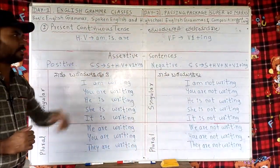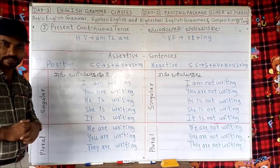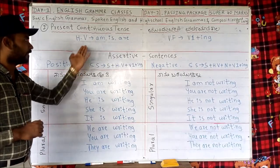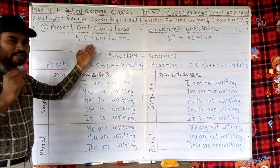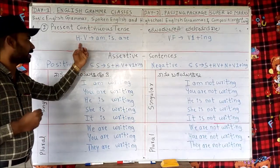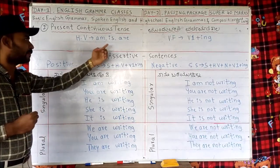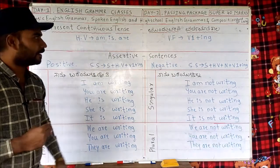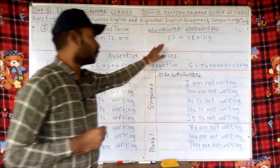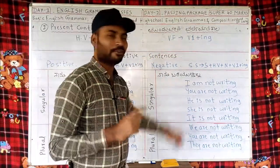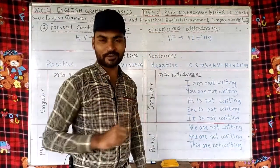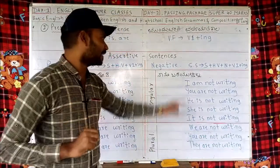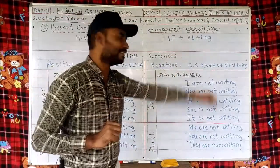Present continuous tense — Mundu Varida Varta Mana Kala. Here we have three helping verbs: am, is, are. Then verb form — only one verb form we have, that is V1 plus ING.